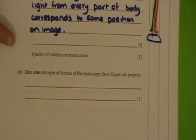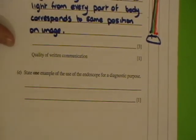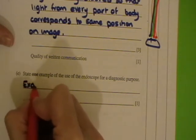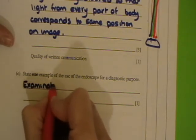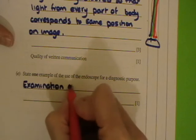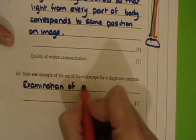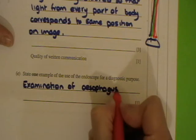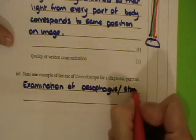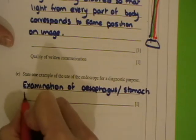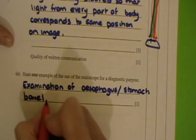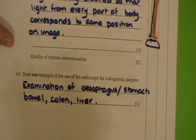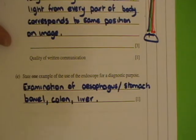Part I: state one example of the use of the endoscope for a diagnostic purpose. It's used for examinations — it could be of any body part: the esophagus, stomach, bile duct, colon, even the liver, and so on. They all have particular names.